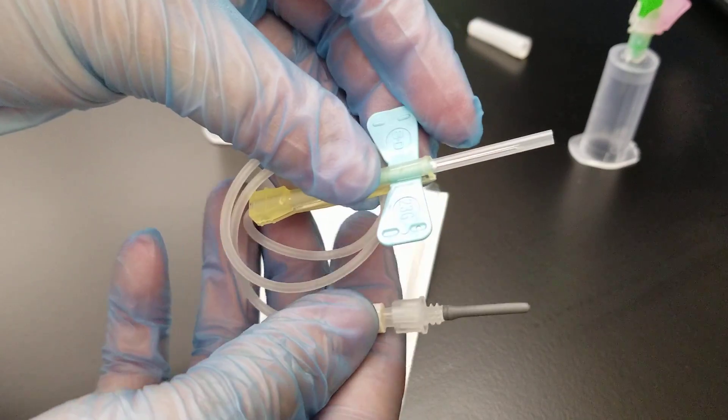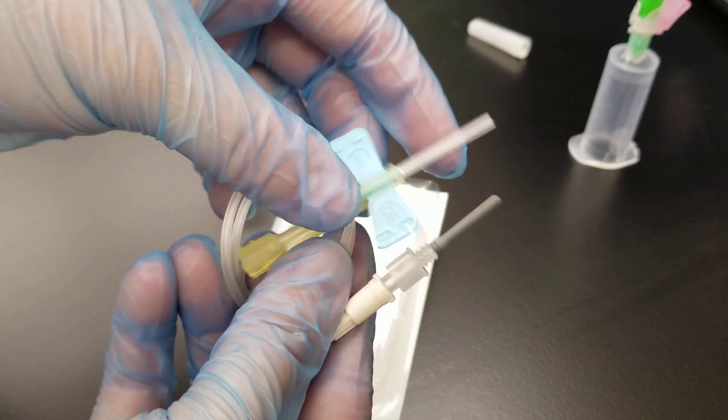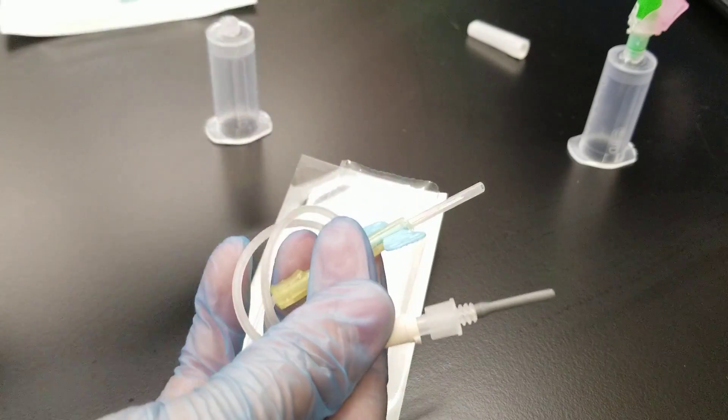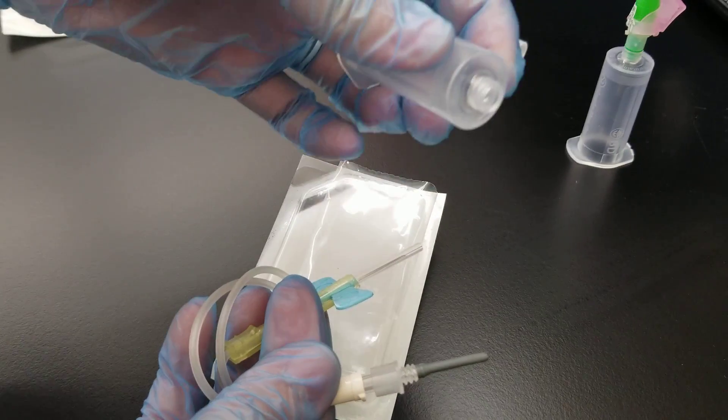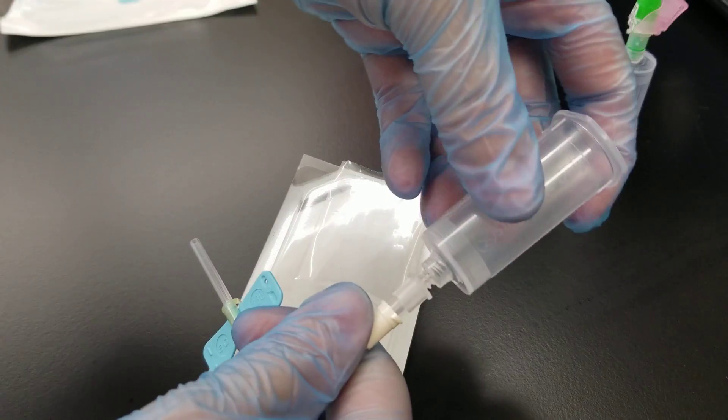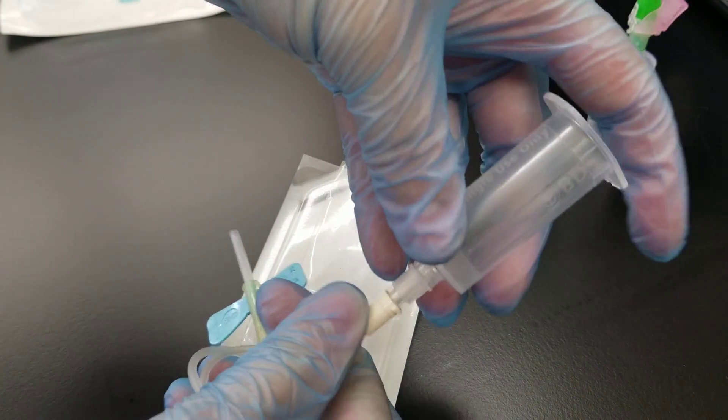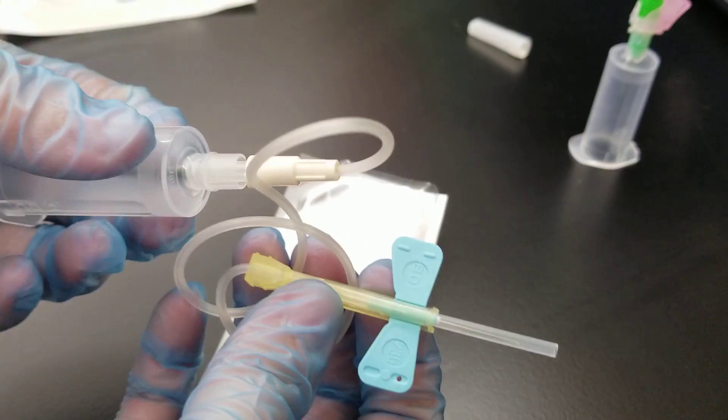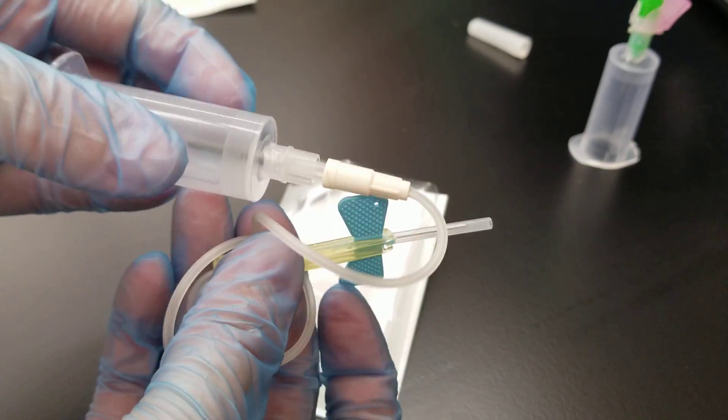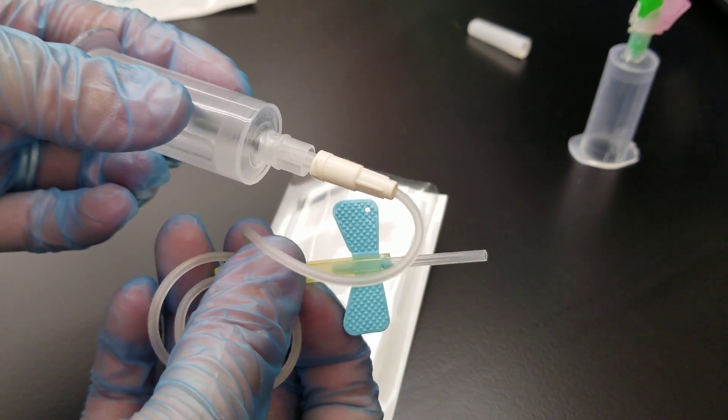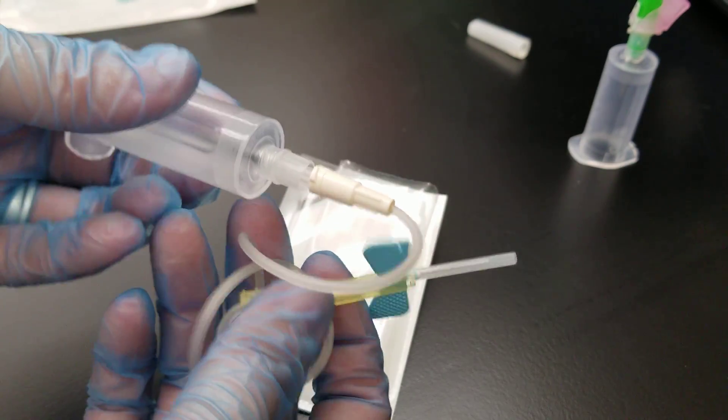So we have tubing with two different needles. The sheath needle goes into the hub. It screws on just like our other one did. Just like so. And then we're ready to prepare the patient to get ready for a venous blood draw.